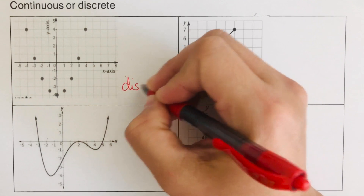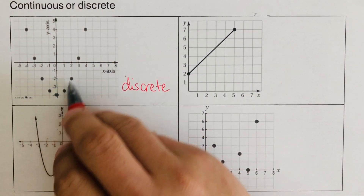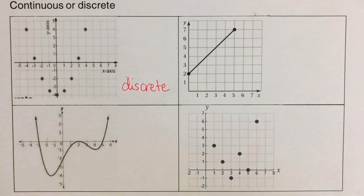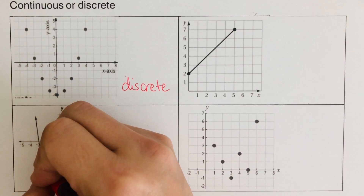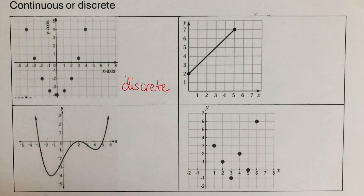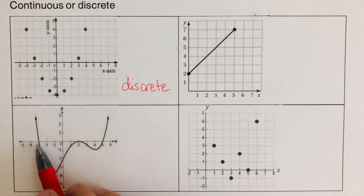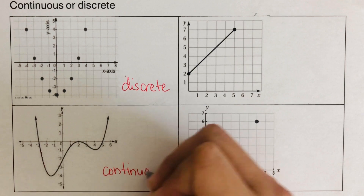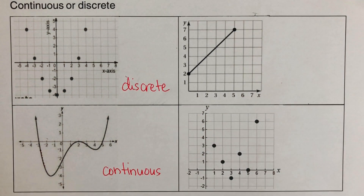So in this first graph, the dots are not connected, so that's discrete. For the second graph, you might say there are no visible dots — but remember, any line or curve is made up of an infinite number of points connected together. So a plain line graph is actually continuous, because it's made up of numerous, infinite connected dots.